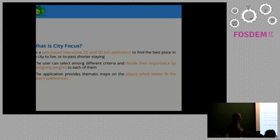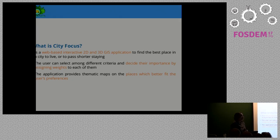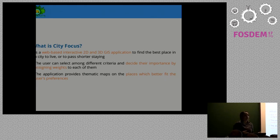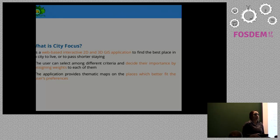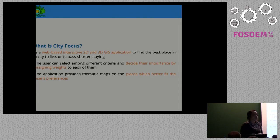So what is CityFocus? It's a web-based interactive 2D and 3D application — not only to find the best place in a city to live, but also to plan a certain stay. Normally when you want to move to a city you don't know, you go to Google Maps or OpenStreetMap, check services, then go to another website to check house prices. You have to do a lot of manual work. We wanted to create an application to do all this in just one place.